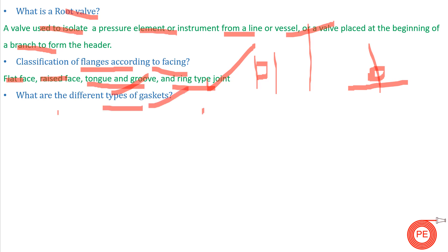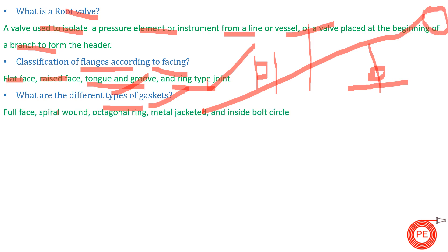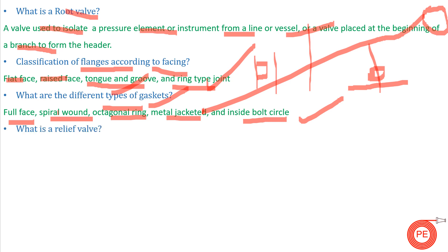The next question is: what are the different types of gaskets? Gaskets include full face type, spiral wound type, octagonal ring, metal jacketed, and inside bolt circle types. These gaskets are selected according to the system and process requirements. A separate detailed video on gaskets is available on the channel.